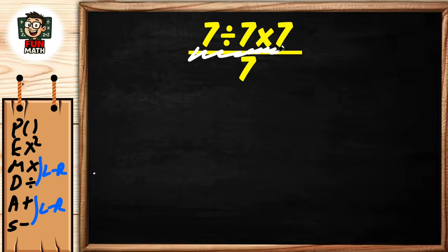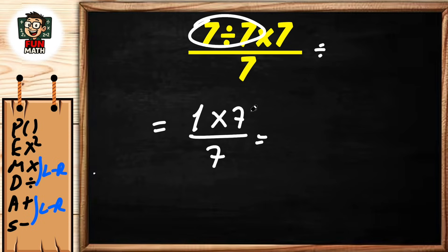The fraction bar represents division. The upper part of the fraction is done first. Here we have division and multiplication. The division on the left is done first: 7 divided by 7 equals 1. Now multiplication: 1 times 7 equals 7.